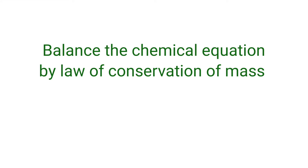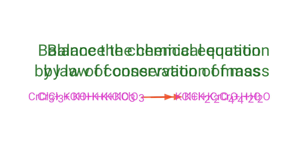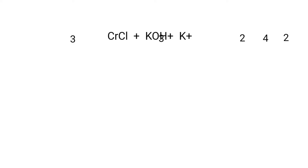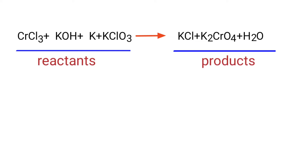Balance the chemical equation by the Law of Conservation of Mass. In this equation, the reactants are trichlorochromium, potassium hydroxide, potassium, and potassium chlorate. The products are potassium chloride, potassium chromate, and water.